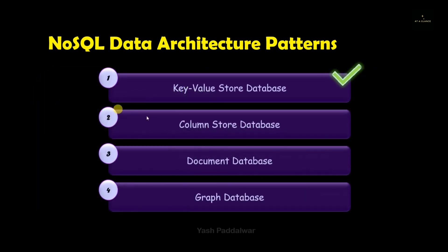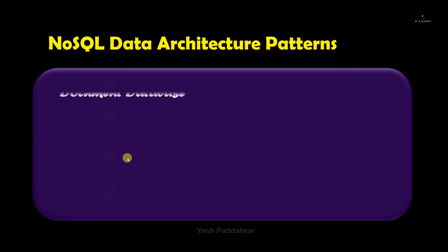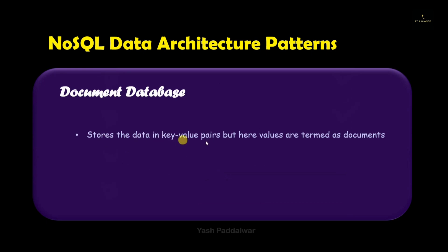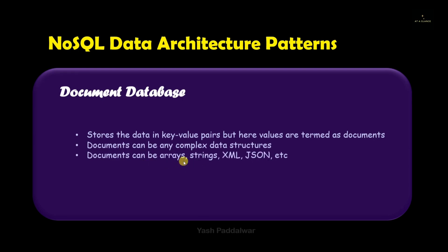Let's move on to the next data architecture pattern of NoSQL, which is the document database. Basically it stores the data in the form of key-value pairs, but this time the value is termed as a document, which is more or less similar to semi-structured data. The key must be unique. These documents can be any complex data structure — for example, arrays, strings, XML (Extensible Markup Language), or JSON (JavaScript Object Notation). Also note that documents can have nesting inside them, which means multiple documents can be inside a single document, which can increase the complexity of data storage.